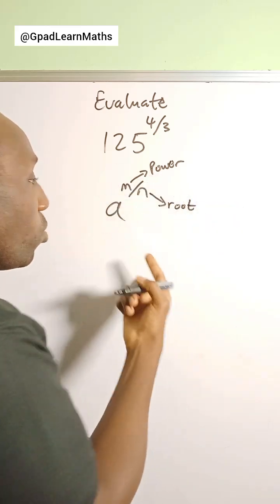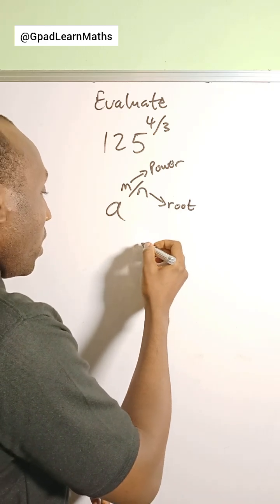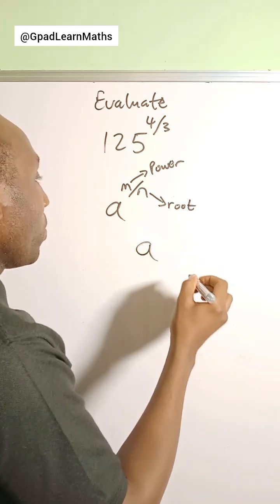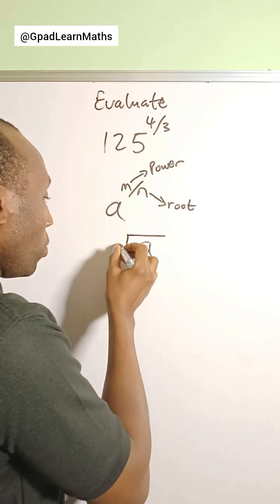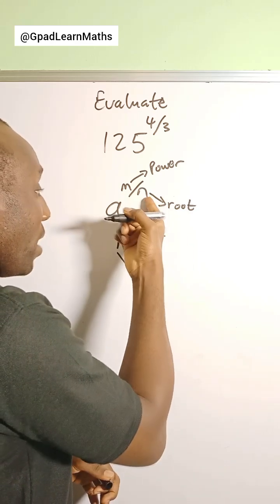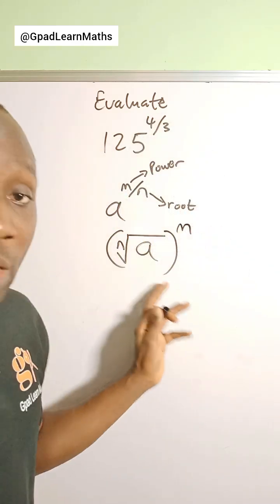What you simply do is: it's going to be a raised to the power of m, and then the nth root of a, because this n is the root, all raised to the power of m. This is how you evaluate terms like that that have fractional index.